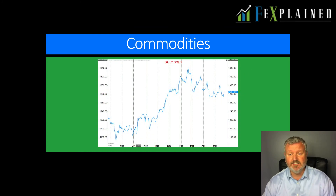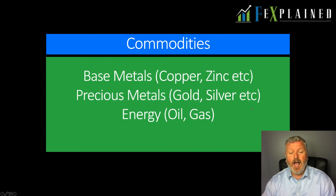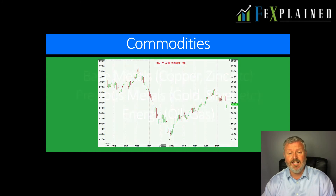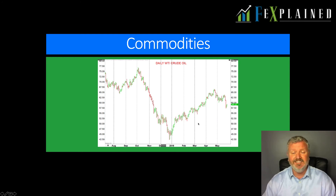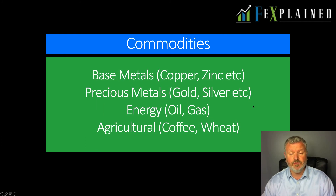Here's an example of a commodity — the price of gold, which has been very strong in 2018 into early 2019, and less strong, weakening, as we've gone through 2019. Elsewhere in the commodity sector, we also have the whole energy sector, including oil and gas. Here we have a chart showing the strong rally in WTI crude oil from late 2018 into early 2019 through to April 2019, and then a sell-off more recently as we've gone into May 2019. Another area in the commodity sector would be agricultural commodities, including coffee, sugar, and wheat.